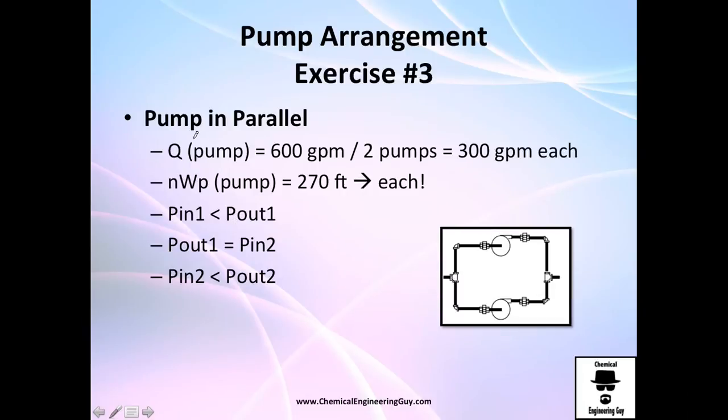Or if you arrange in parallel flow, the volumetric flow rate, as you can see, will be split in two. So divided by two and you get 300 gallons per minute each line. And the pump head will be the same because we cannot change it. If we already load this, this will remain the same.